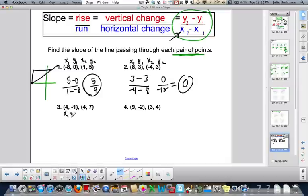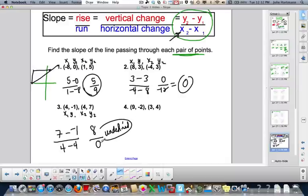So next one, x1, y1, x2, y2. So y2, which is seven, minus y1, which is negative one, over x2, which is four, minus x1, which is four. Seven minus negative one is seven plus one, which is eight. Four minus four is zero. Eight divided by zero, that is your undefined fraction. So that is an undefined slope.